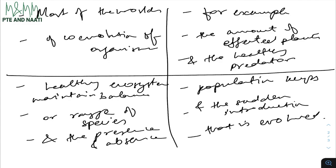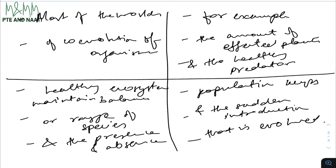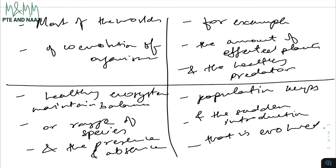Now, once your note-taking is done, let's see how we can speak the retell lecture. Let's do it. So just have a look at my notes — I'll use a template. The lecture is talking about most of the world's co-evolution of organisms. It also denotes a healthy ecosystem maintaining balance, the range of species, and the presence and absence. In addition to that, for example, the amount of affected plants and the healthy predator was mentioned. To conclude this lecture, population keeps — and the sudden introduction that is evolved — is also mentioned.